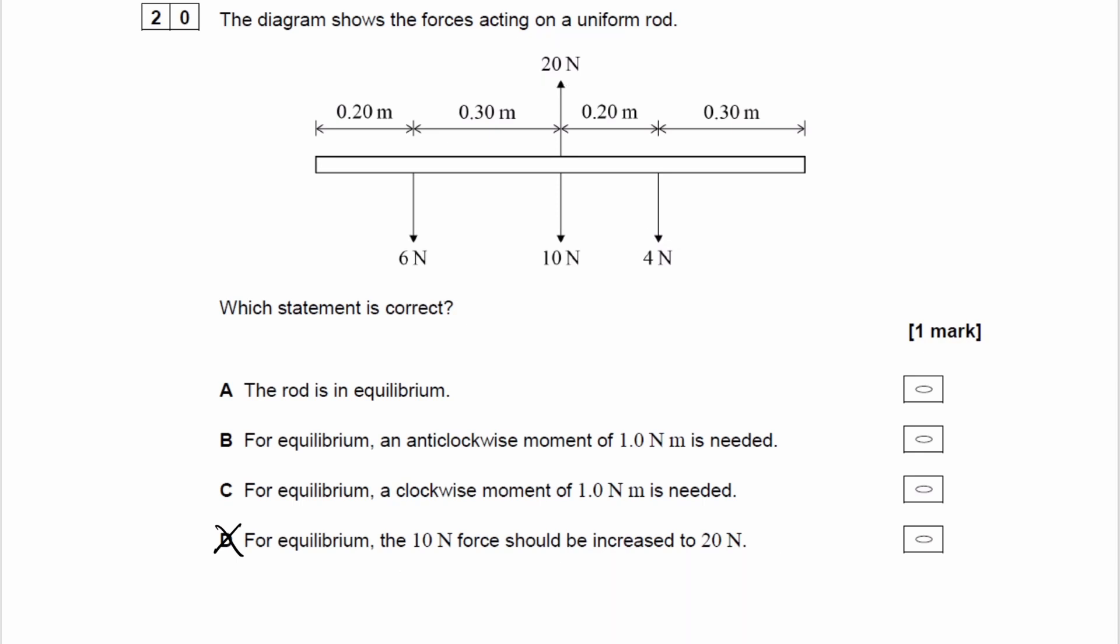So we have to work out now a moment. We have to work out if we need an extra anti-clockwise moment or an extra clockwise moment. Let's pick a point. I think the easiest one to use would be this point here. If we use that point, we eliminate the moments of the 20 Newtons force and the 10 Newtons force.